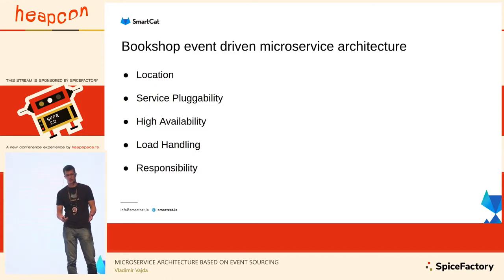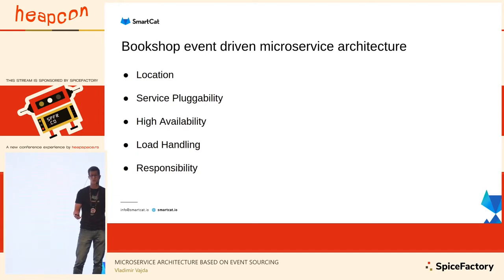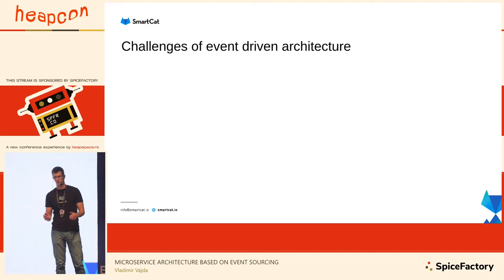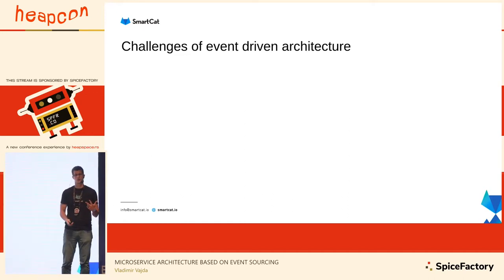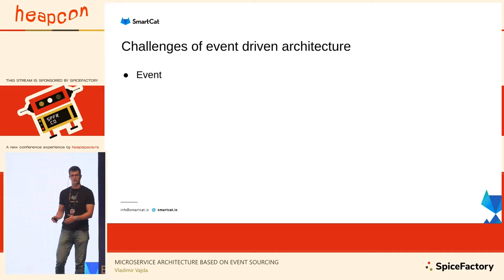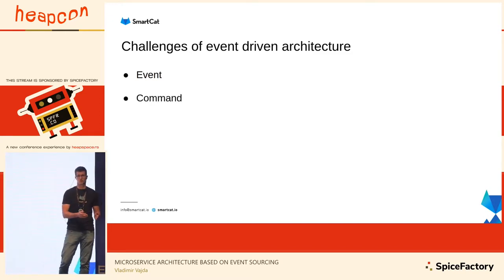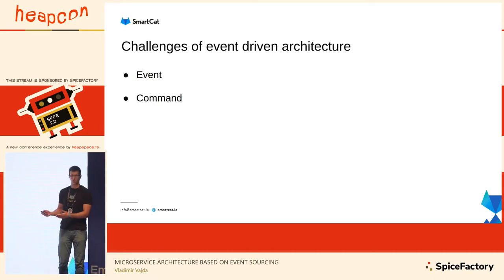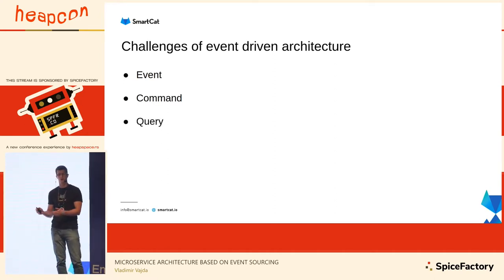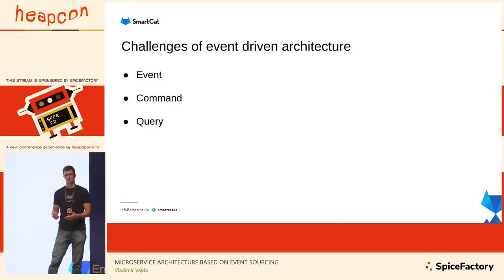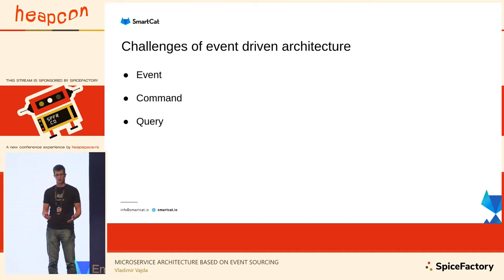There are still some challenges in this kind of architecture, mostly around communication between services. There are three types of communication. First, an event is a statement of the current state of the system that you want to announce and have other services know about. Second, a command — for example 'ship this book' — is an order you want to send to another service. Third, a query is when you want to pull information from another service to present to the user or make a decision. The query is the most problematic one.